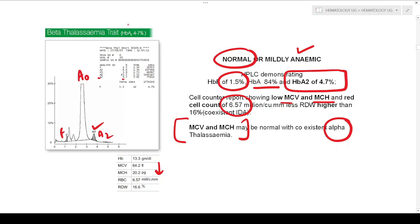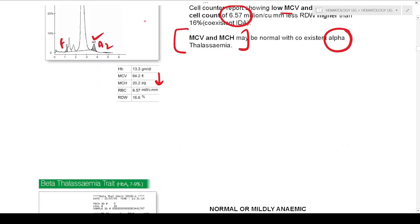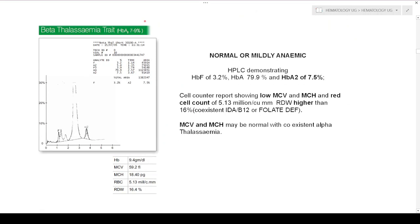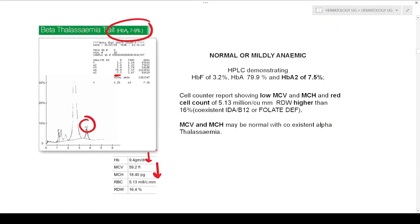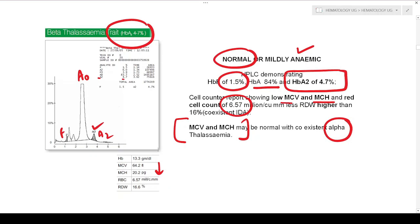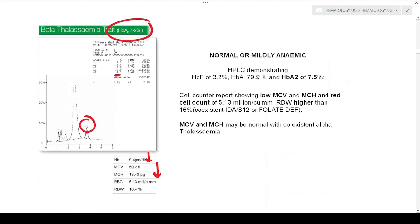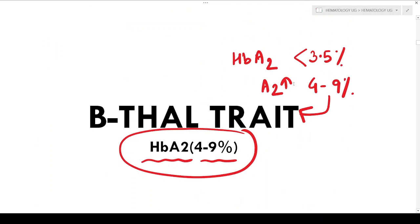This is another case of beta thalassemia trait where the HbA2 level is a little bit higher — in the range of 7 to 9%. In this particular case the A2 level is approximately 7.5%, and MCV/MCH is again low, with hemoglobin quite low. There is more reduction in beta globin chain synthesis here compared to the previous case, but both cases are mild. This case has mild anemia while the previous was completely normal.